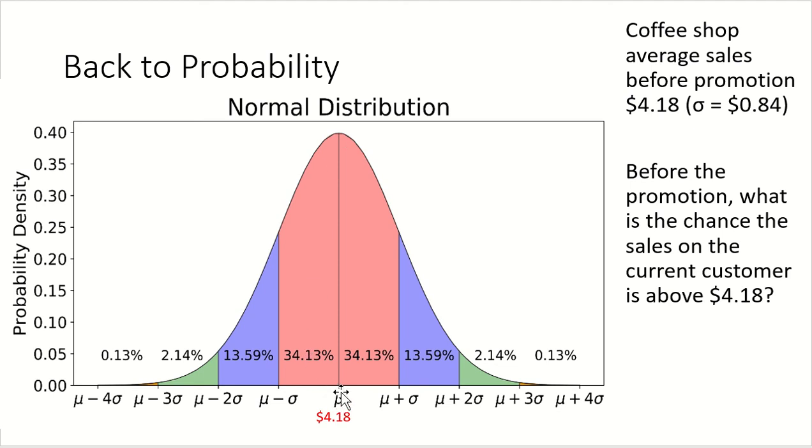In the center, the bell curve is the average. In this case, $4.18. It's symmetrical, which means the shape of the left is exactly the shape of the right. Also in this bell-shaped curve, what we'll see is whenever it's normally distributed, we will have $4.18 in the center.